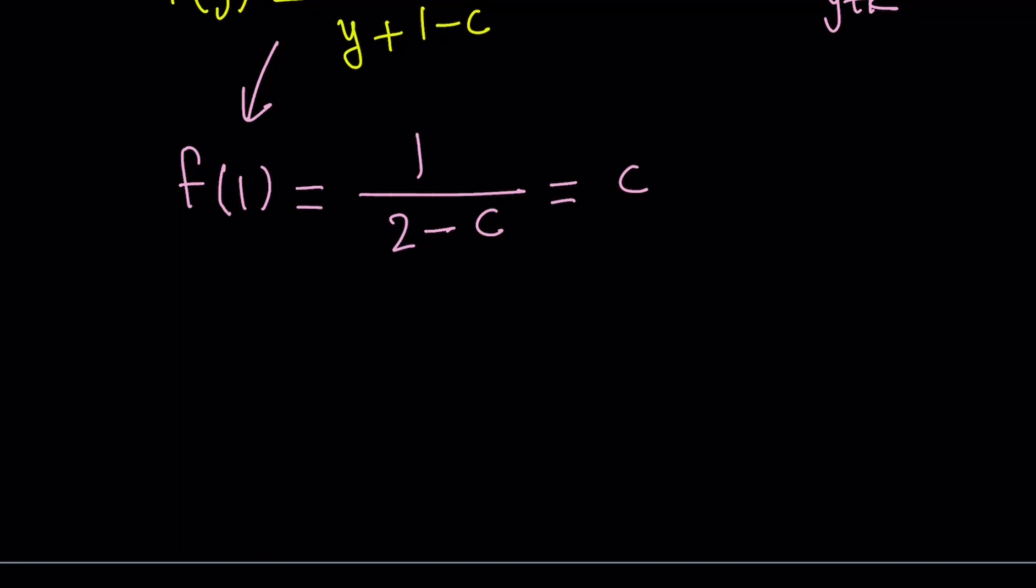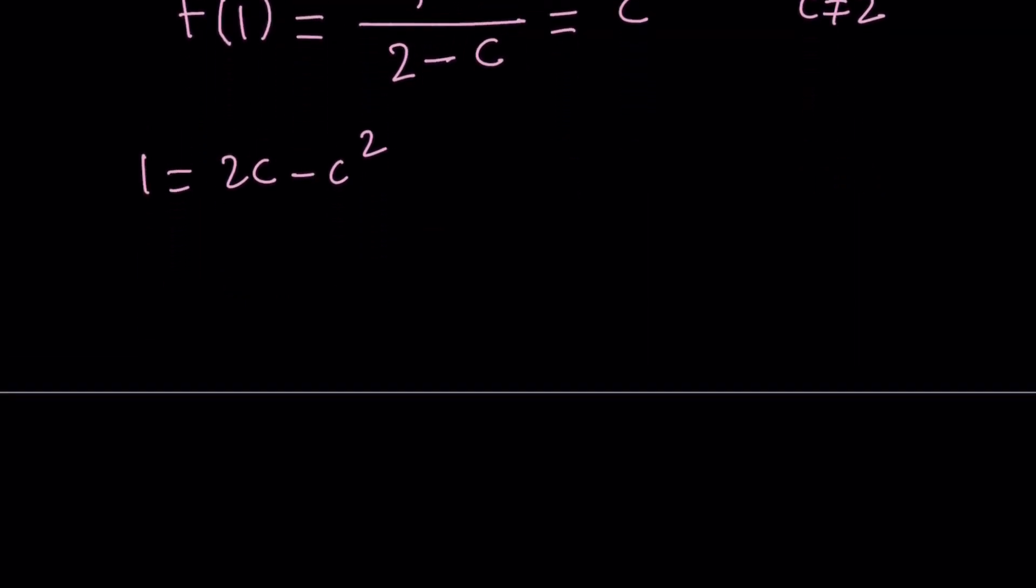And what does that give us? It gives us a really nice equation. First of all, we have to note that c does not equal 2. We have to make sure it doesn't. So under those conditions, we can go ahead and multiply both sides by 2 minus c. And that gives us 1 equals 2c minus c squared. And then we can put everything on the left-hand side. c squared minus 2c plus 1 equals 0. And even though this gives us a quadratic equation, it has a double root. So the roots coincide, basically. We get a perfect square. c minus 1 squared equals 0, which implies that c is equal to 1.